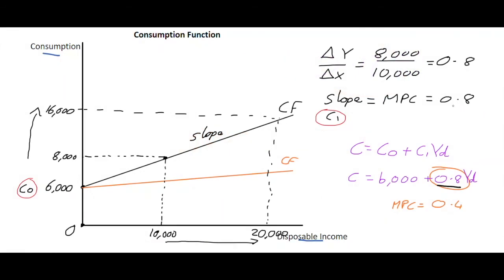We can also have a second example where the consumption function itself shifts upwards. This would happen where the MPC hasn't changed, people are still spending the exact same amount of the extra income, 0.8. However, because people are wealthier in this economy, the consumption function has shifted upwards.